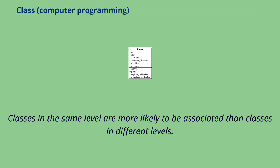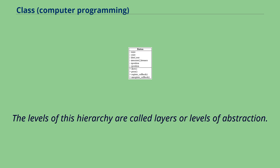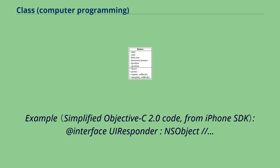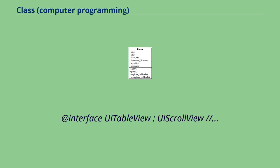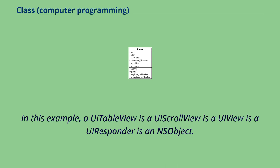Classes in the same level are more likely to be associated than classes in different levels. The levels of this hierarchy are called layers or levels of abstraction. For example, a UIView is a UIScrollView, which is a UIView, which is a UIResponder, which is an NSObject — illustrating a hierarchy where each class inherits from the one above it.